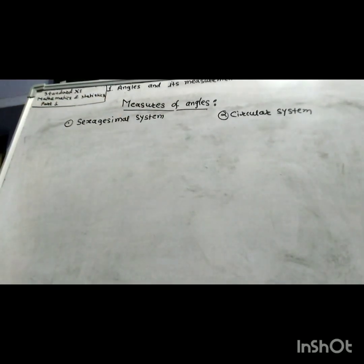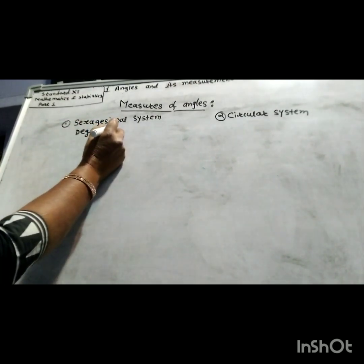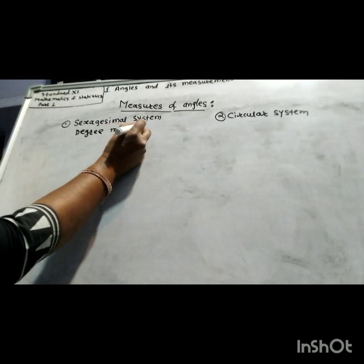Measures of Angles. There are two systems to measure angles: the sexadecimal system and the circular system. The sexadecimal system means degree measure, and the circular system means radian measure.